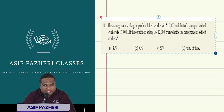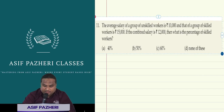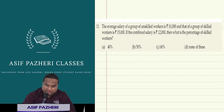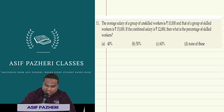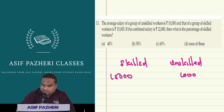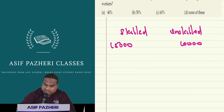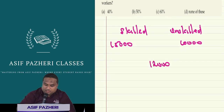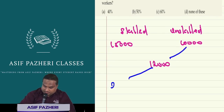In this question, there is a skilled worker and an unskilled worker. The skilled worker earns Rs. 15,000 and the unskilled worker earns Rs. 10,000. The combined average is Rs. 12,000.